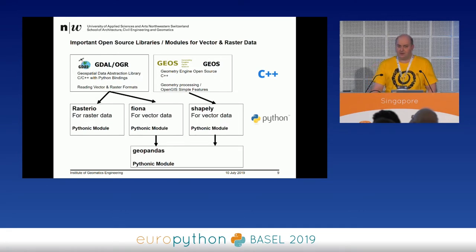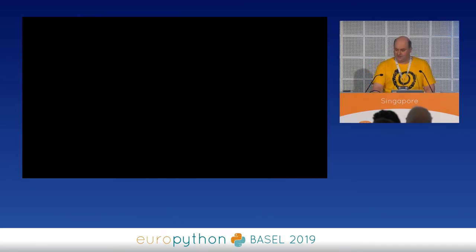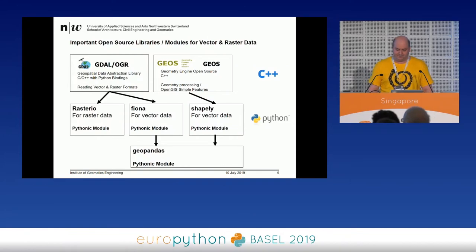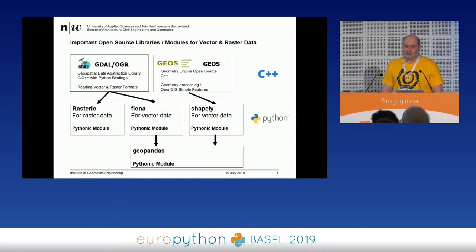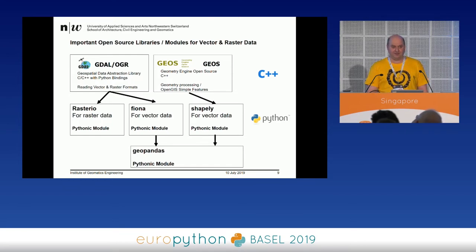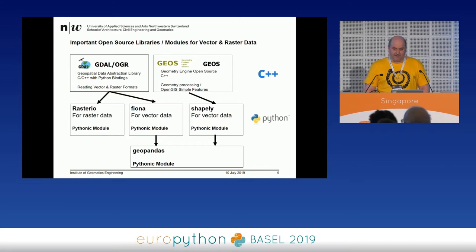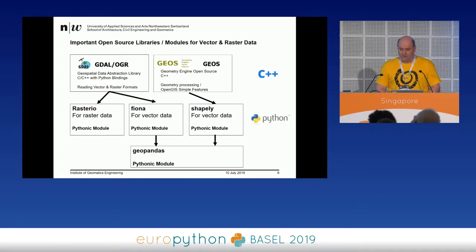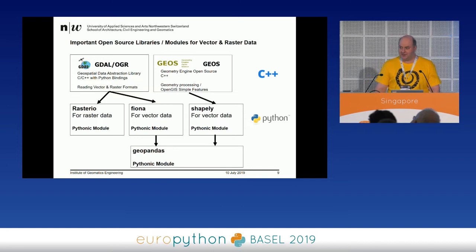Everything I'm showing today is open source. The two most important libraries are C++-based: GDAL/OGR and GEOS. They have Python bindings, but they're not very Pythonic. Therefore, people created more Pythonic Python modules that use the same C++ libraries. I would recommend using Rasterio for raster data processing, Fiona for vector processing, and Shapely to do vector data operations. And if you know Pandas, there is also GeoPandas, which extends Pandas for geospatial data.